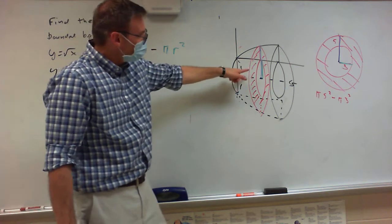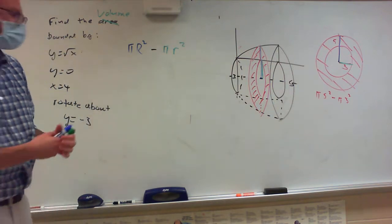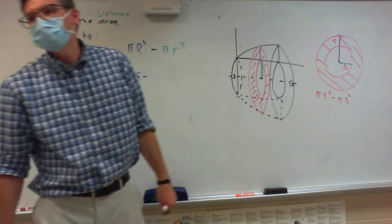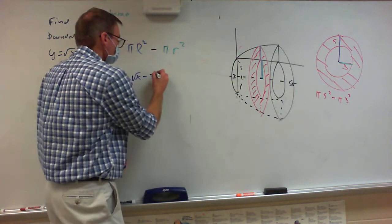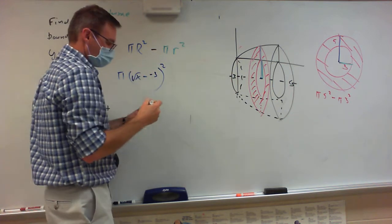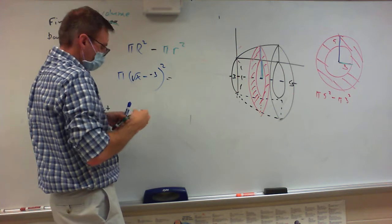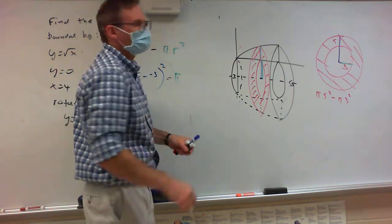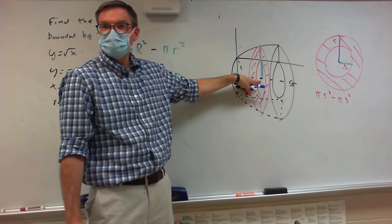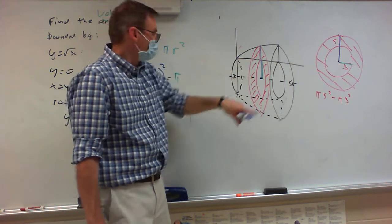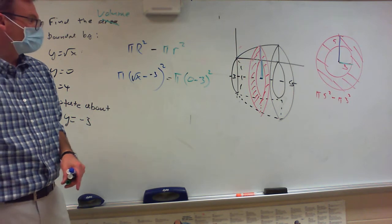What's my big radius? I look at the blue line — top minus bottom. What's the top function? Square root of x. What's the bottom function? Negative 3. See how the bottom is negative 3? So this is going to be square root of x minus negative 3, squared. Then pi minus. What's my little radius? It's going to be 0 minus negative 3. So that's 3 squared.